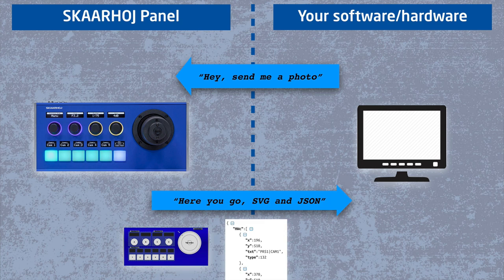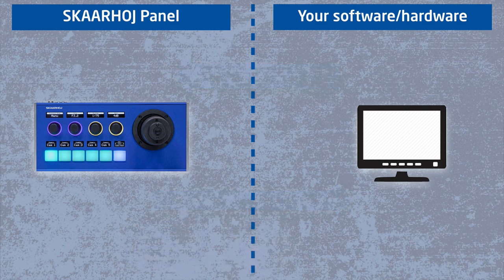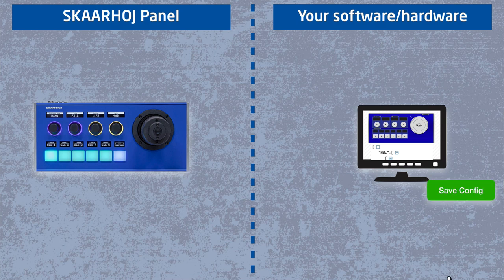The topology includes stuff like the coordinates of components, their type, how they look, and so forth. This information lets you build a universal graphical interface to associate your actions with triggers on the panel, and in this way you'll instantly support all Skyhoy panels, present and future.